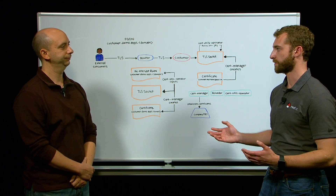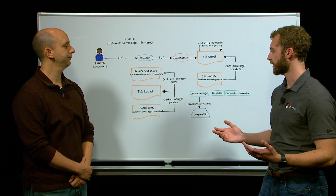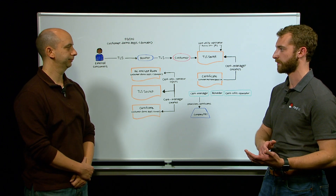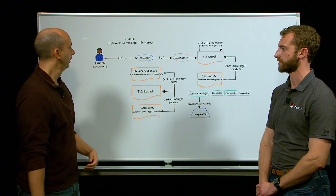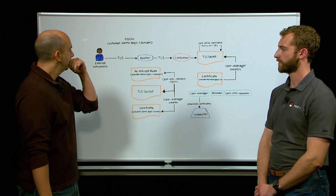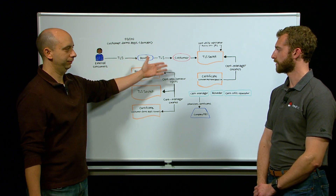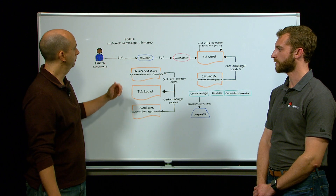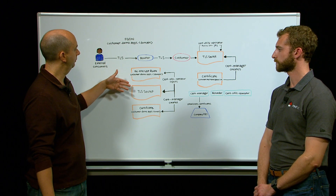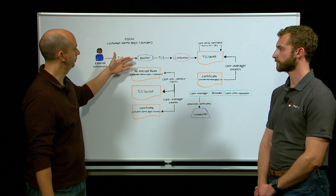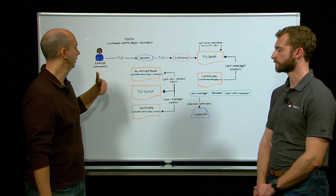So we've got our TLS secret. Now what do we do to actually use that secret so that our customers can access our app in a secure fashion? In this scenario, we are doing a re-encrypt end-to-end type of encryption. And in this case, what we have to do is to inject the secret into a route.